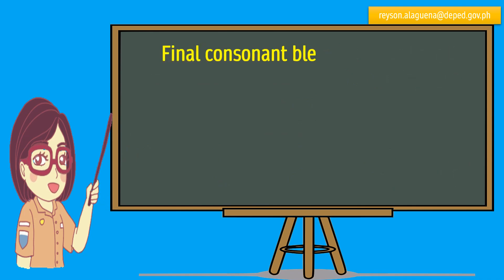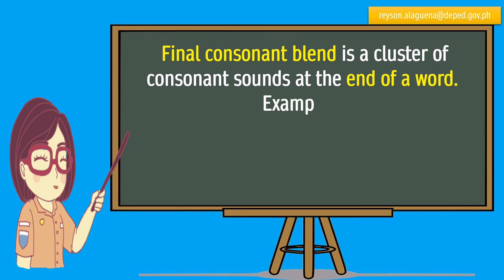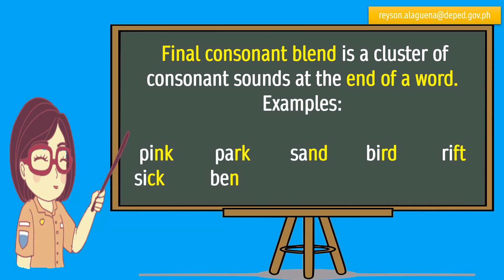Final Consonant Blend is a cluster of consonant sounds at the end of a word. Examples: pink, sick, park, bend, sand, tank, bird, mark, rift, past.